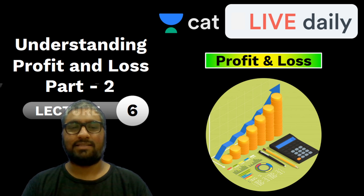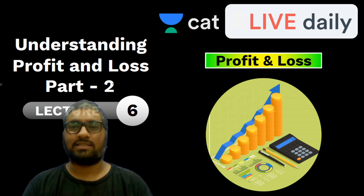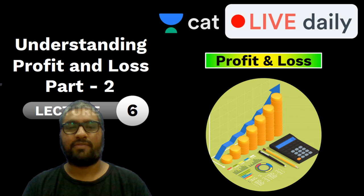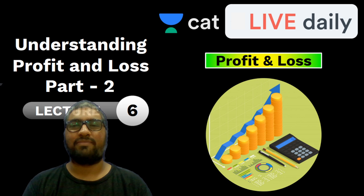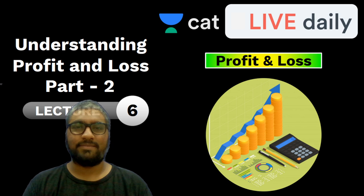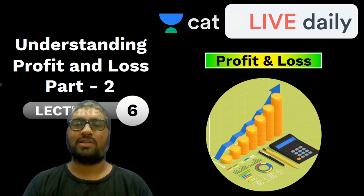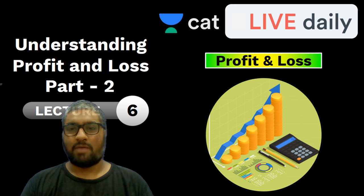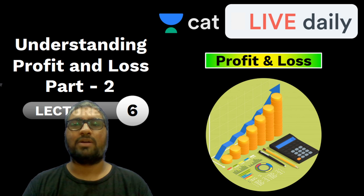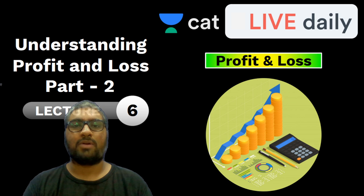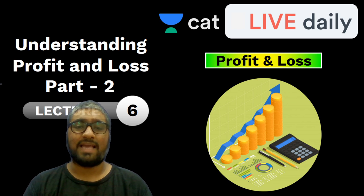This is the sixth lecture all in all. The earlier five: the first four lectures were based on percentages, the fifth lecture was the basics of profit and loss, and today we are here to deal with the second part of profit and loss. I hope you guys are excited, because I am extremely excited to talk with you today and make sure that you learn something new. Profit and loss is something you already know because you've been living in and out of it. But when a problem is posted, especially in CAT, how you would deal with that is what this session is all about.